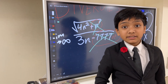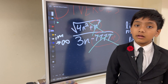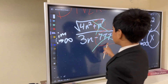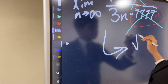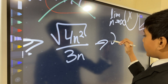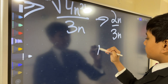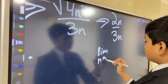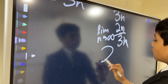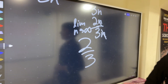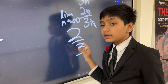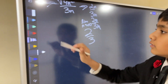Even 777 might seem like a big number, but when n is in the hundreds of millions, 777 makes no difference. So we're left with the square root of 4n² over 3n, which becomes 2n over 3n. The limit as n approaches infinity of that is just 2/3. Since 2/3 is greater than 0 and less than infinity, it is a finite number. This sequence converges.